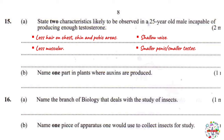Part B: name one part in plants where auxins are produced. Auxins are produced in the apical meristem — the meristematic tissues. These are at the apical bud or even at the tips of the roots. Any of these is correct.